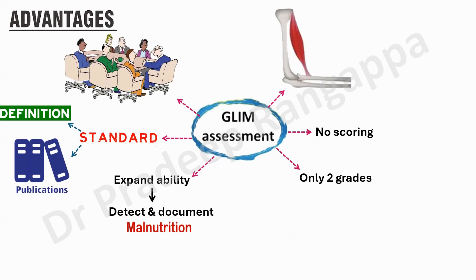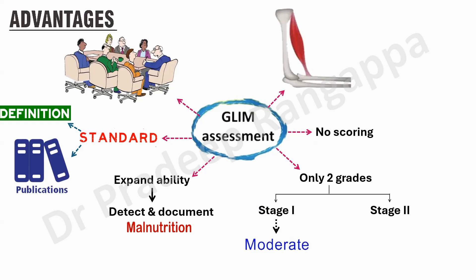There are only two grades in GLIM: moderate malnutrition, called Stage 1, and severe malnutrition, called Stage 2. It is a very simplified approach with distinctive advantages from an epidemiological standpoint, allowing you to categorize someone as malnourished and publish data. The definition is standardized and it has an expanded ability to detect and document malnutrition.